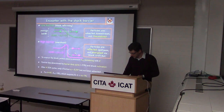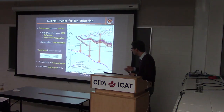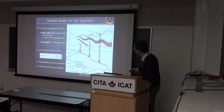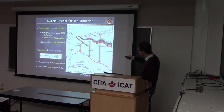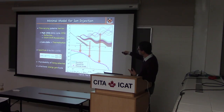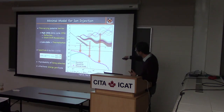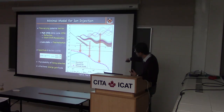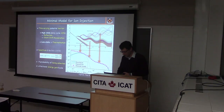We now have a more quantitative theory that predicts how many particles will go through the shock, how many will form a suprathermal tail, and how many will be reflected and injected into a power law — determining the overall normalization of the power law.